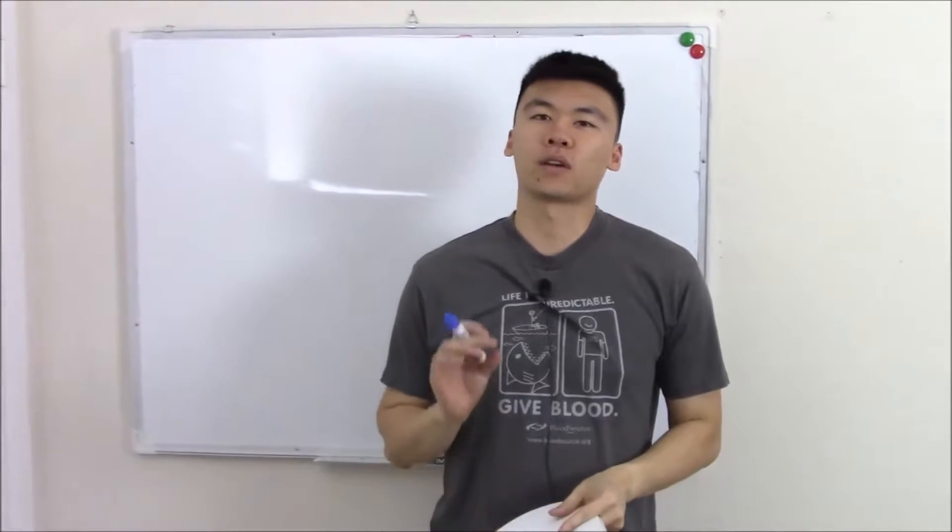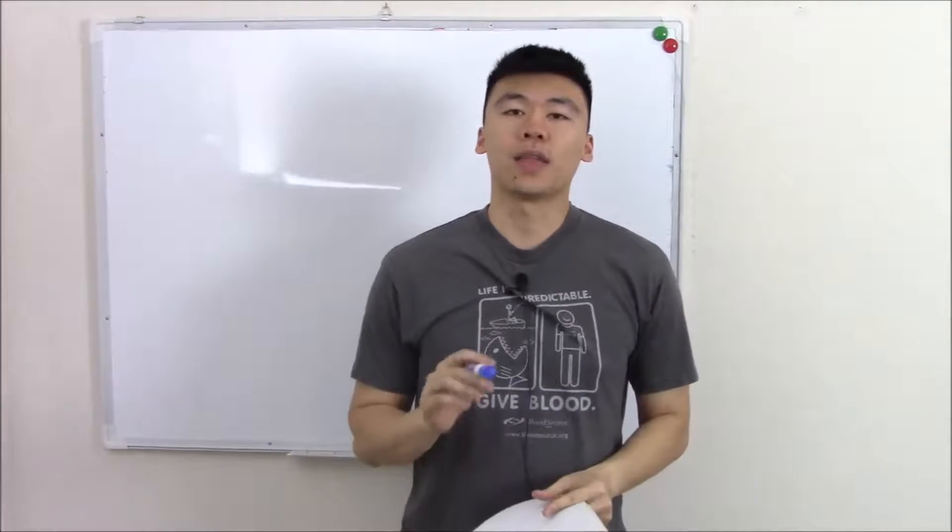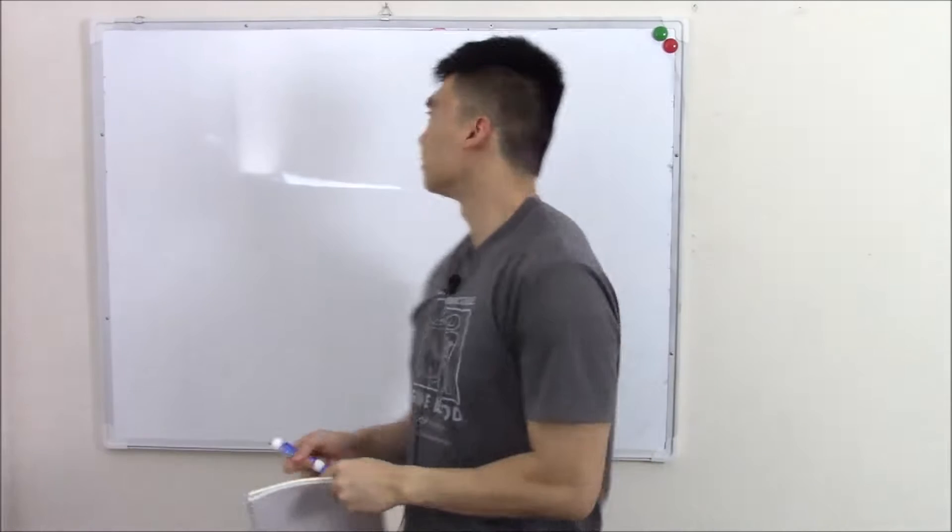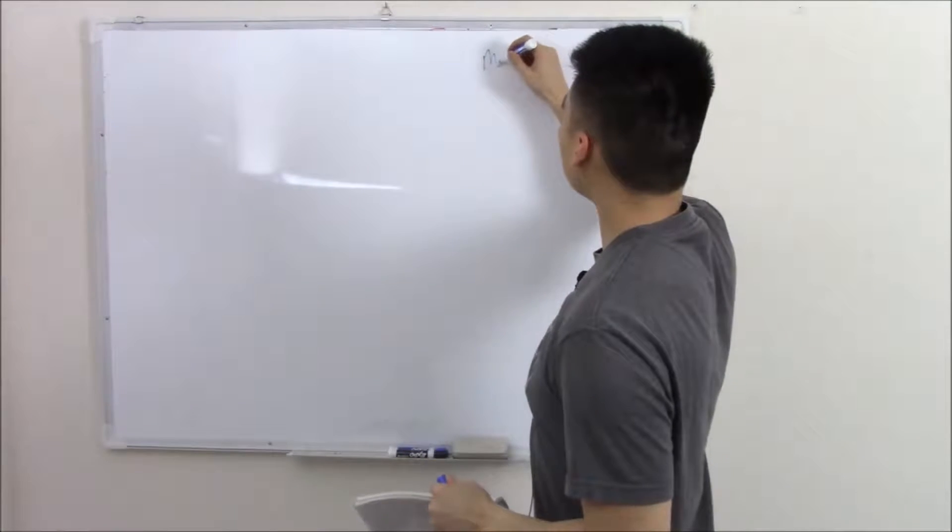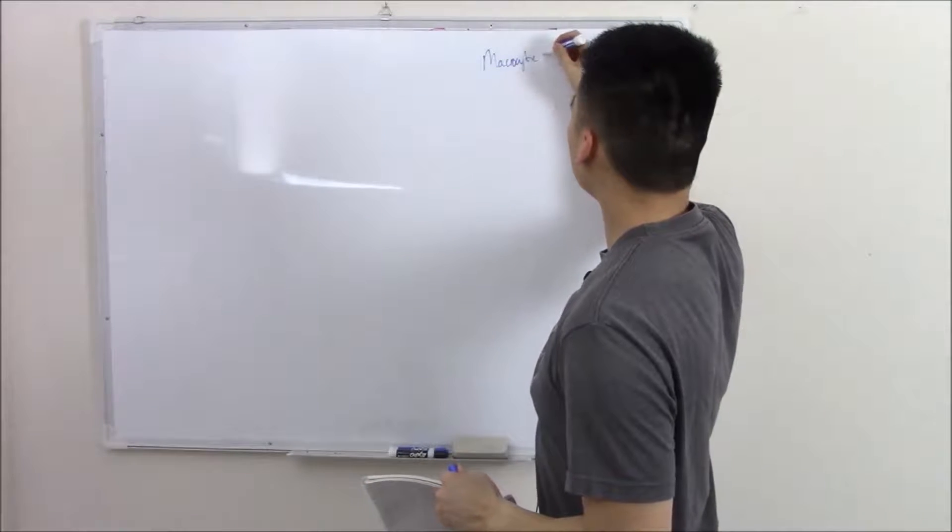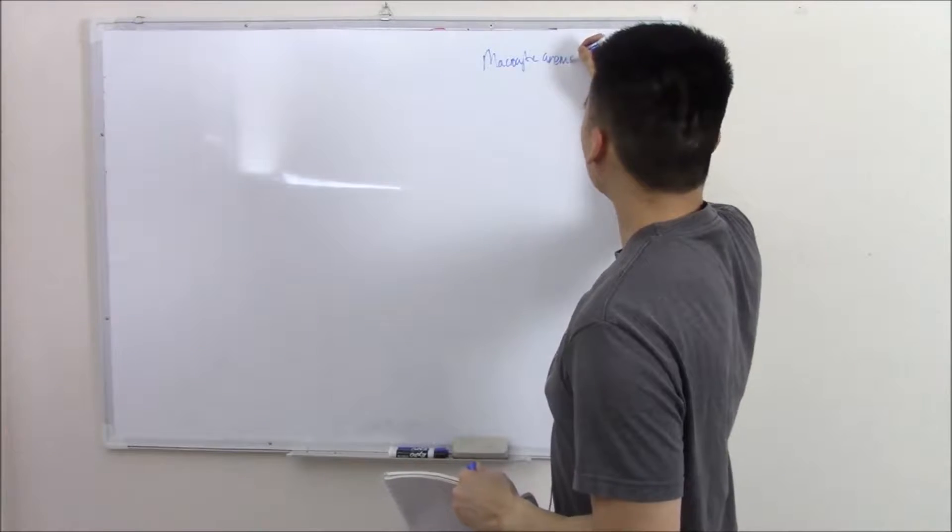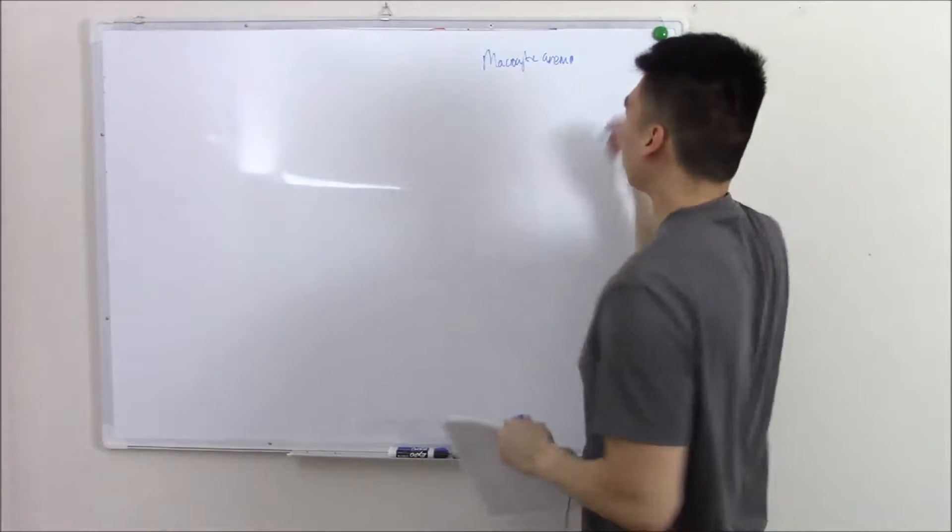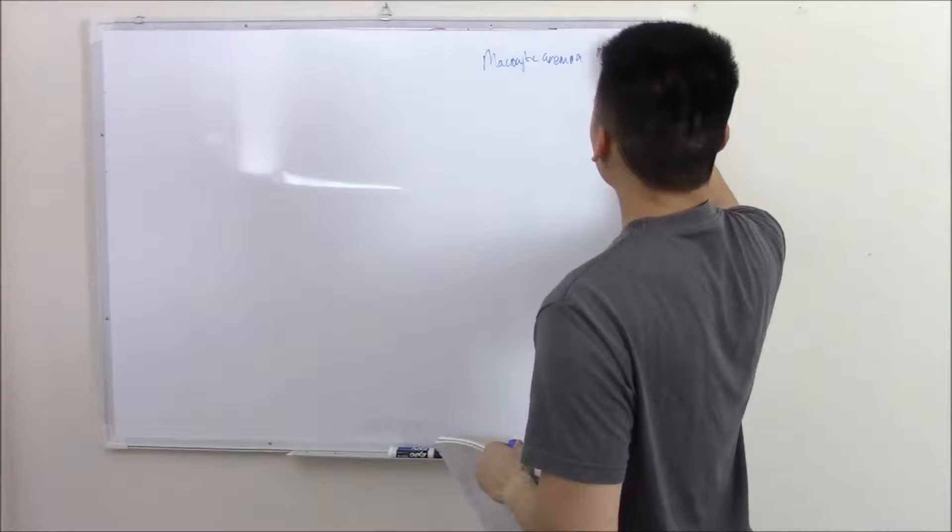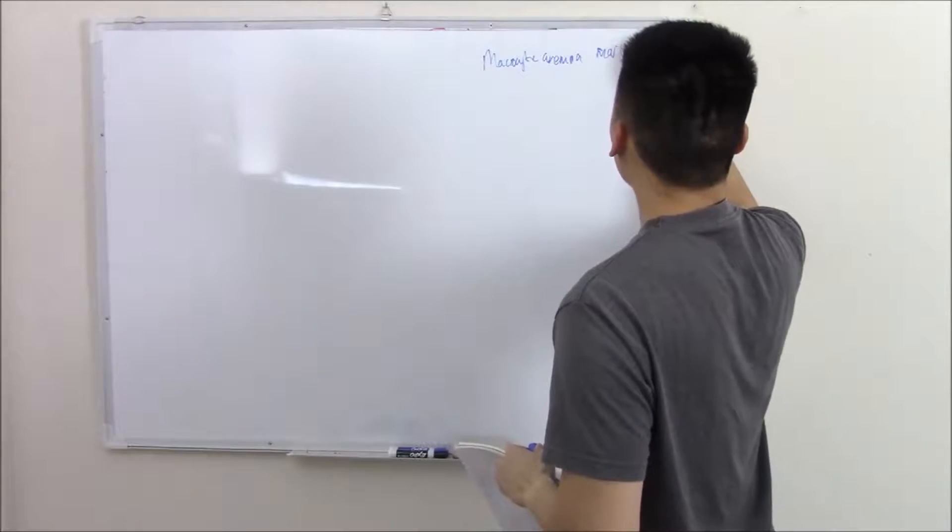We're finishing our talk on anemias with our last category of anemia, and that is macrocytic anemia. Macrocytic anemias are anemias that have MCV over 100.